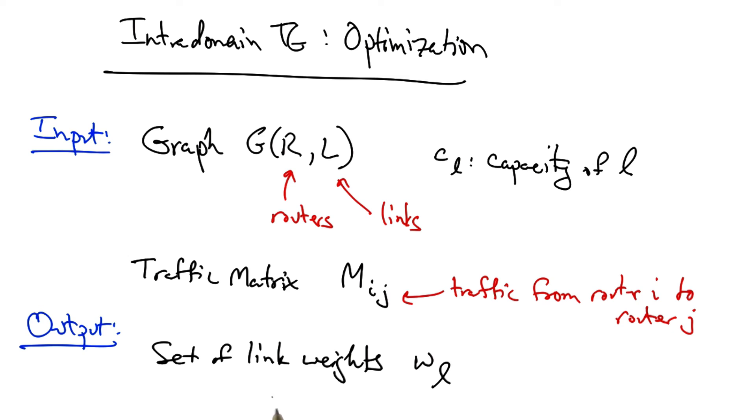Ultimately, the setting of these link weights should result in a fraction of the traffic from i to j traversing each link L, such that those fractions satisfy the network-wide objective function. Defining an objective function is tricky.